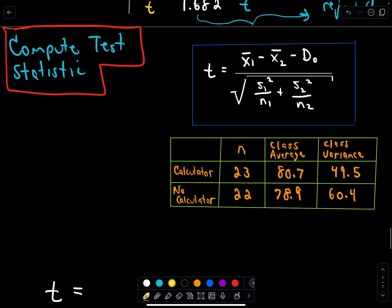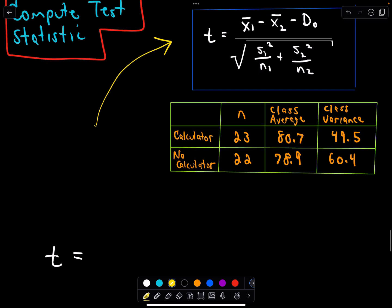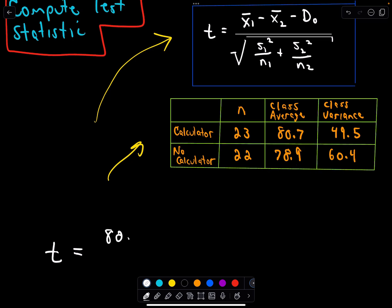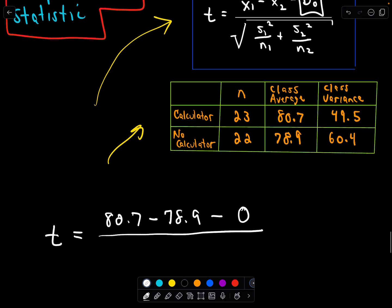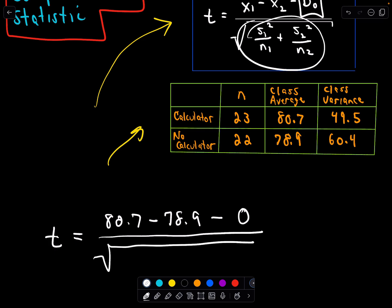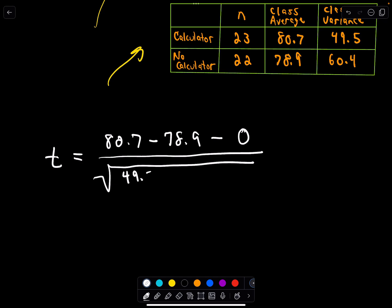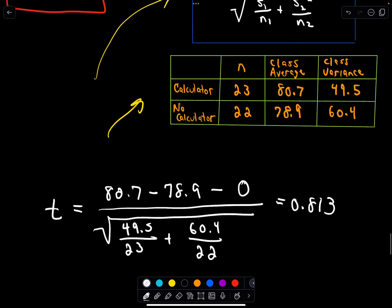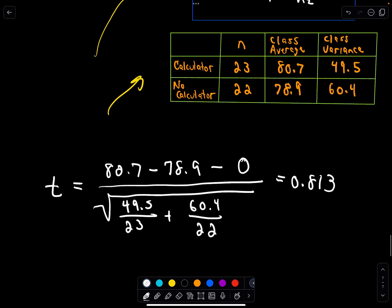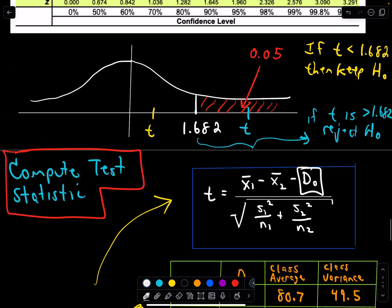So here's the formula for our test statistic. Here's our information. So when I dropped all of those values in, I'm just using my table, so the averages I had 80.7 minus 78.9. Now that d value, that was the difference in the two and our null hypothesis said that that was equal to 0. And then we just divide by the stuff underneath the square root. So when I dropped those values in that's 49.5 divided by 23 plus 60.4 divided by 22, and I got this to be 0.813. And that tells me that my test statistic, I'll call it ts for test statistic.